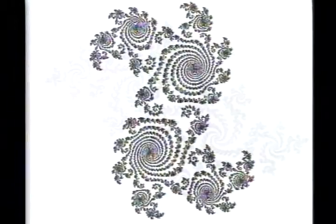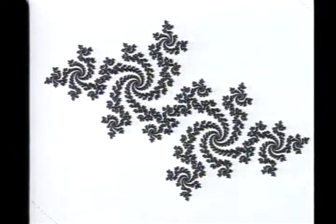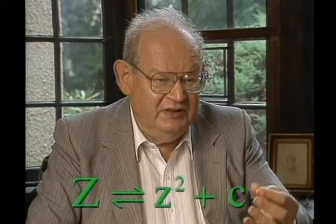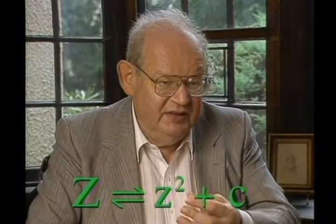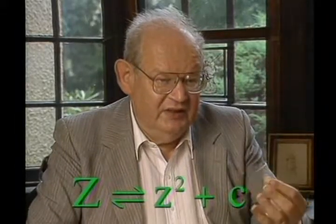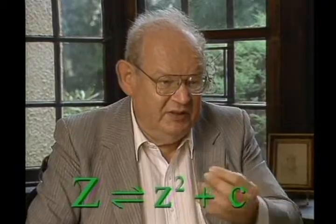We started programming Julia sets of all kinds. It was extraordinarily great fun. And in particular, at one point, we became interested in a set of the simplest possible transformation: Z goes to Z squared plus C — so Z times Z plus C.